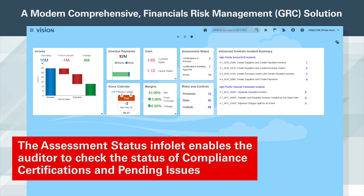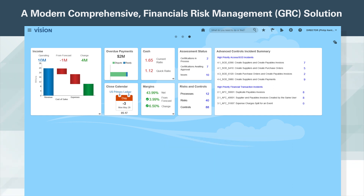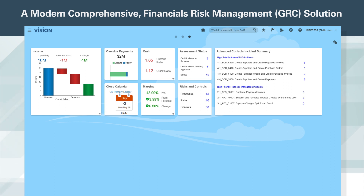The assessment status view enables the auditor to check the status of compliance certifications and pending issues. In this example, two certifications are still in process. To find out if an open operational control assessment is holding up a certification, the Financial Reporting Compliance part of Risk Cloud enables the auditor to drill in to find the root cause.